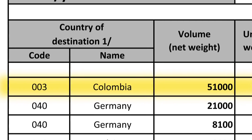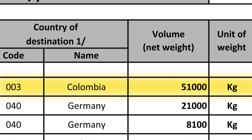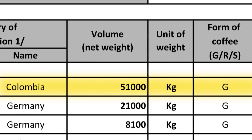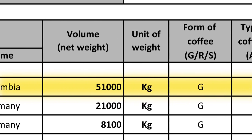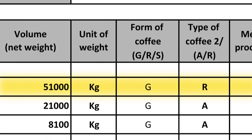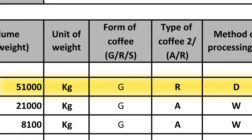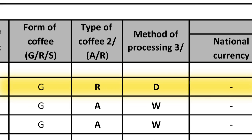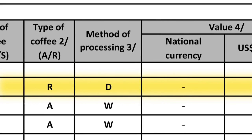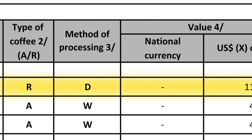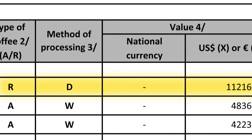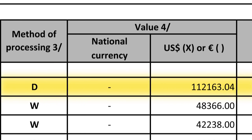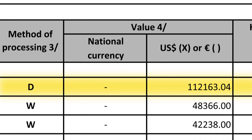Using Colombia as the destination example, on the statistical report the three separate Certificates of Origin are presented as one entry, because the form of coffee — green — the type — Robusta — and the method of processing — dry — are the same. The values are added together to give a total value in US dollars.